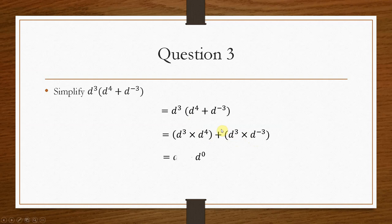And if we do that, we'll get, this is rule number 1. So it's d cubed times d to the power 4, so you add the power, so you get d to the power 7. Likewise here, 3 plus minus 3 is 0. Now, anything to the power 0, we have to use the 0 power law. And your final answer becomes d to the power 7 plus 1.